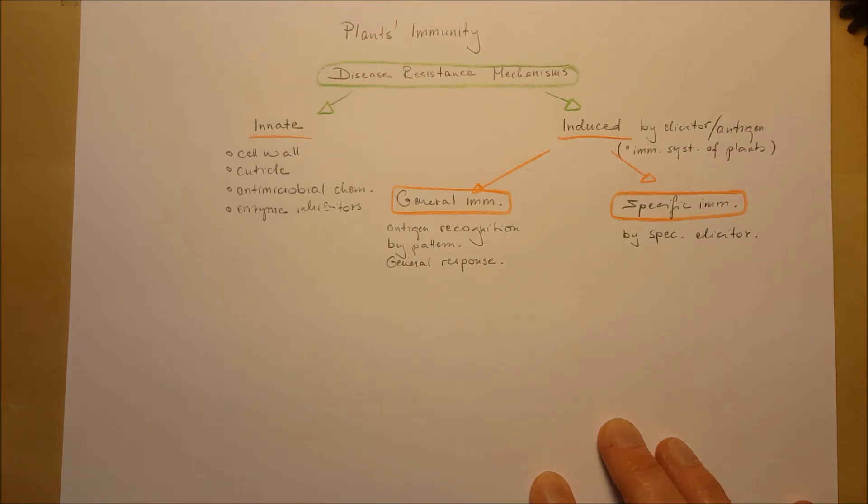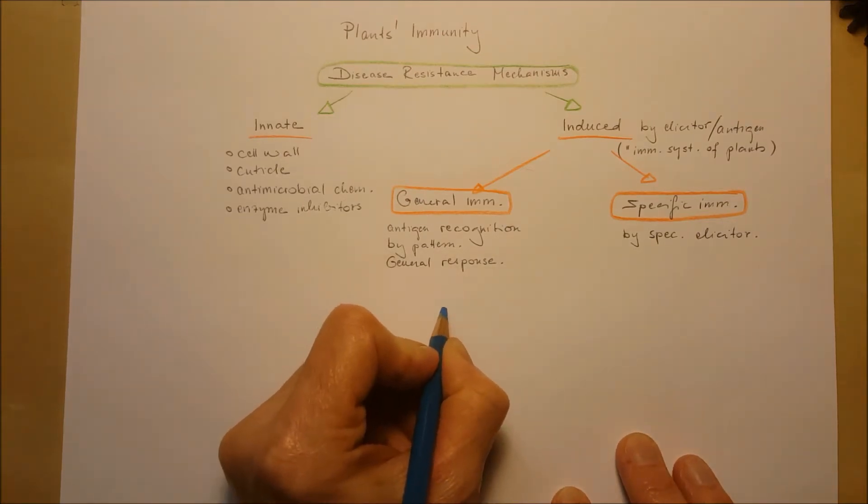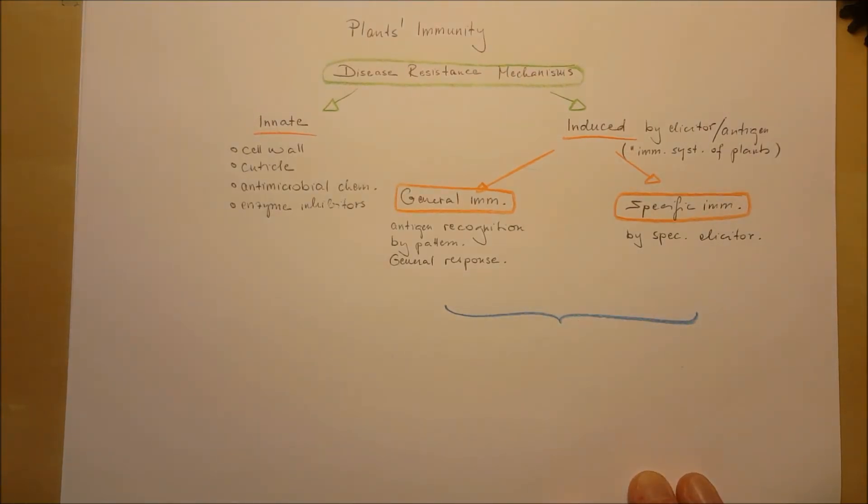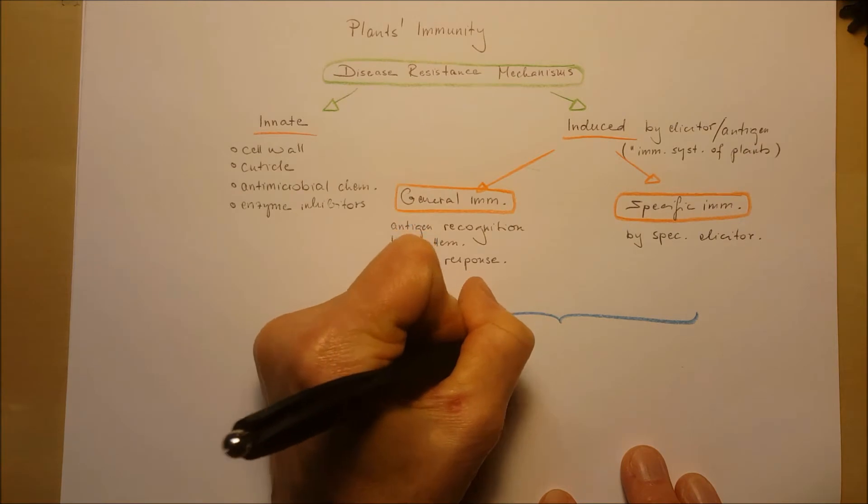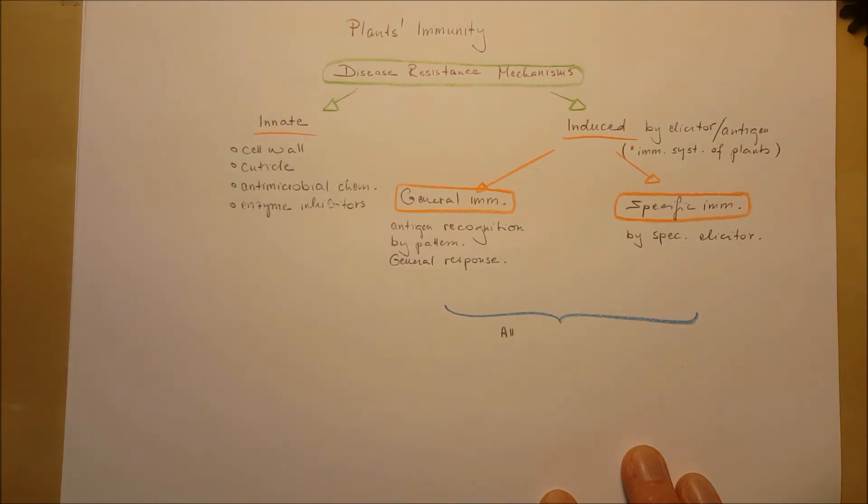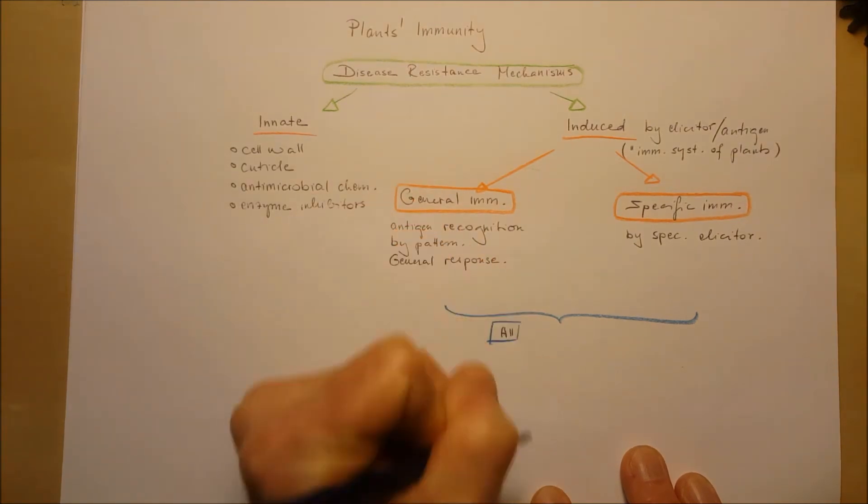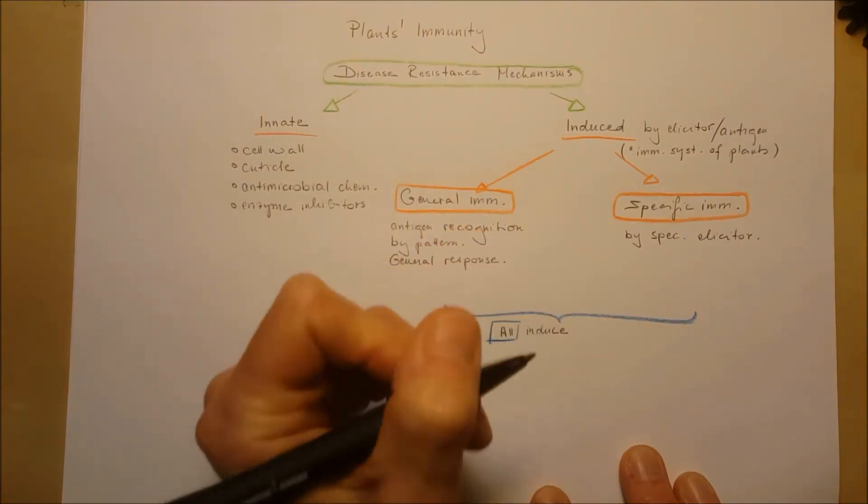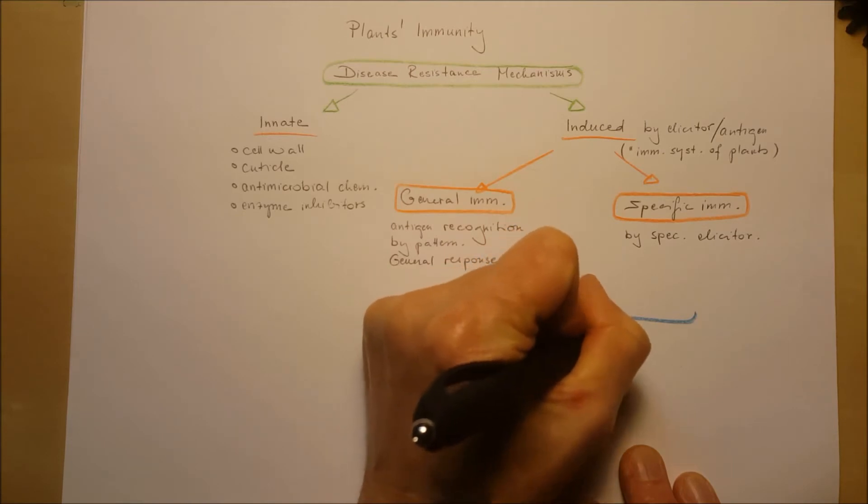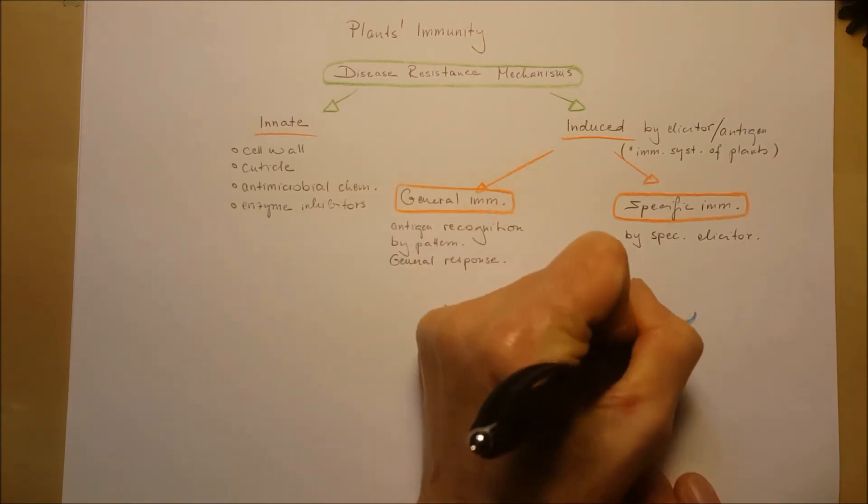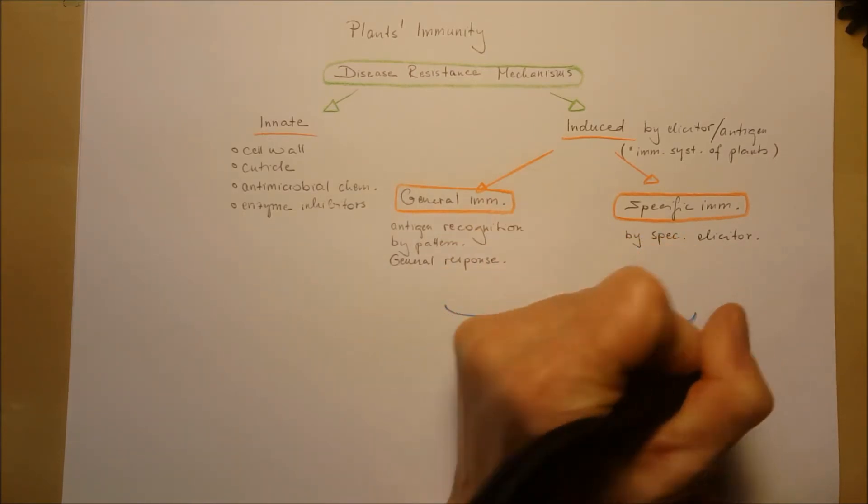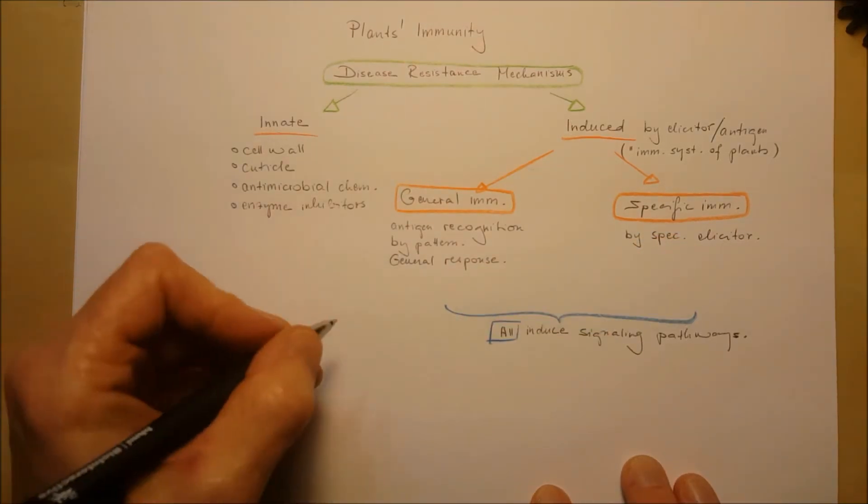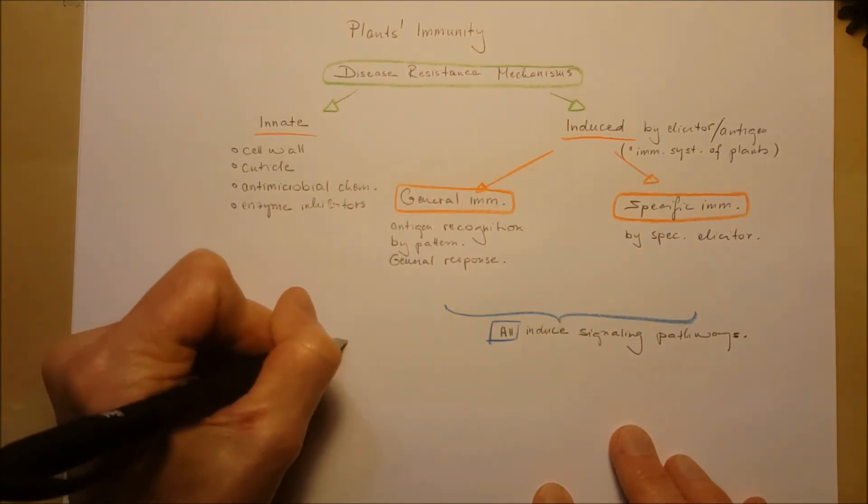Both the general immunity and the specific immunity induce signaling pathways. This is really important for AP Biology - the cell signaling. They are hammering on cell signaling and this is a great example of how the plant's defense mechanism responds to elicitors or foreign attackers.